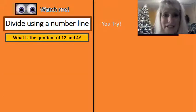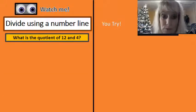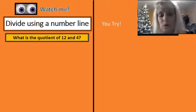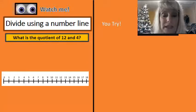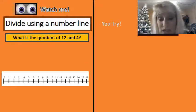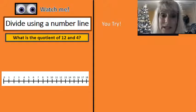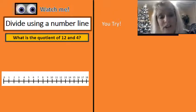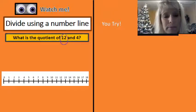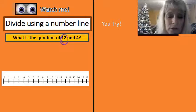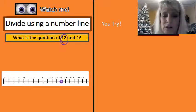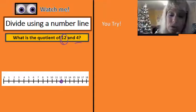The next thing that we did in multiplication is we used a number line. So we're also going to use a number line for division. When we did multiplication on a number line, we started at zero and we moved out to the right because our number was getting bigger. But in division, we actually start at the biggest number, which is 12. We put our dot right here at 12, and we're going to make four jumps backwards until we get to zero.